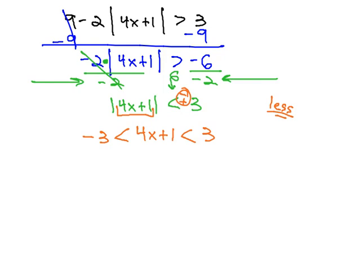We can now solve this tripartite inequality like solving any other tripartite, by subtracting 1 from all three parts, giving us negative 4 is less than 4x, which is less than 2.